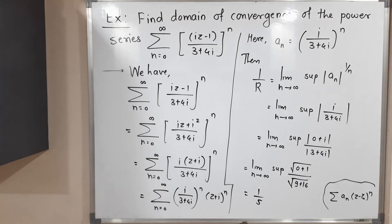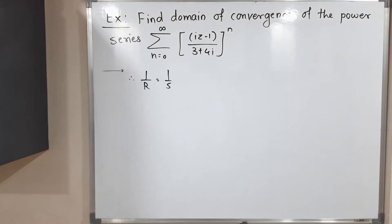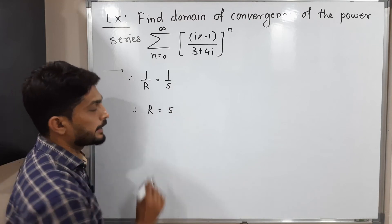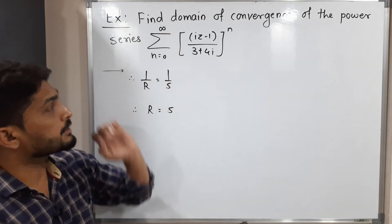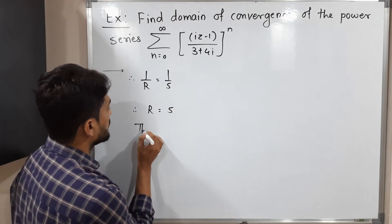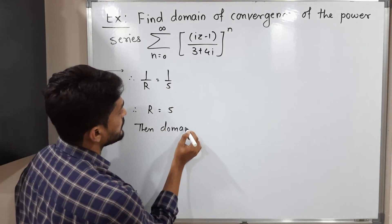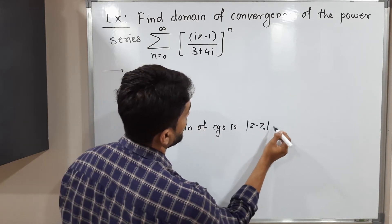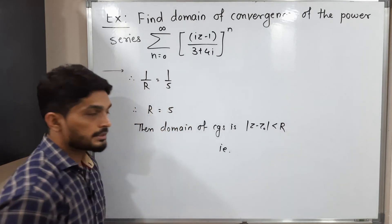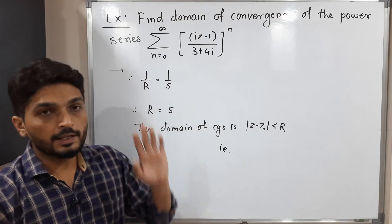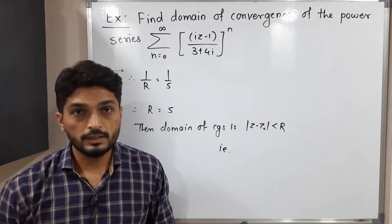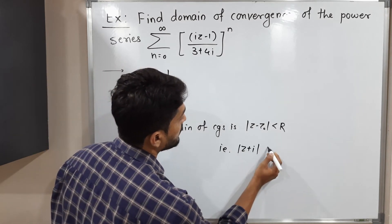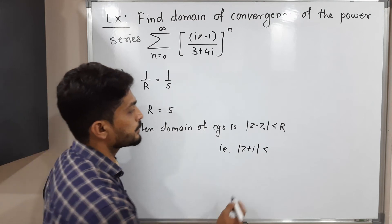Now the question is to find the domain of convergence. The standard form for domain of convergence is |z minus z₀| < R. In our series, after simplification we have (z plus i) raised to n, so the domain of convergence is |z + i| < 5, where our radius of convergence is 5.